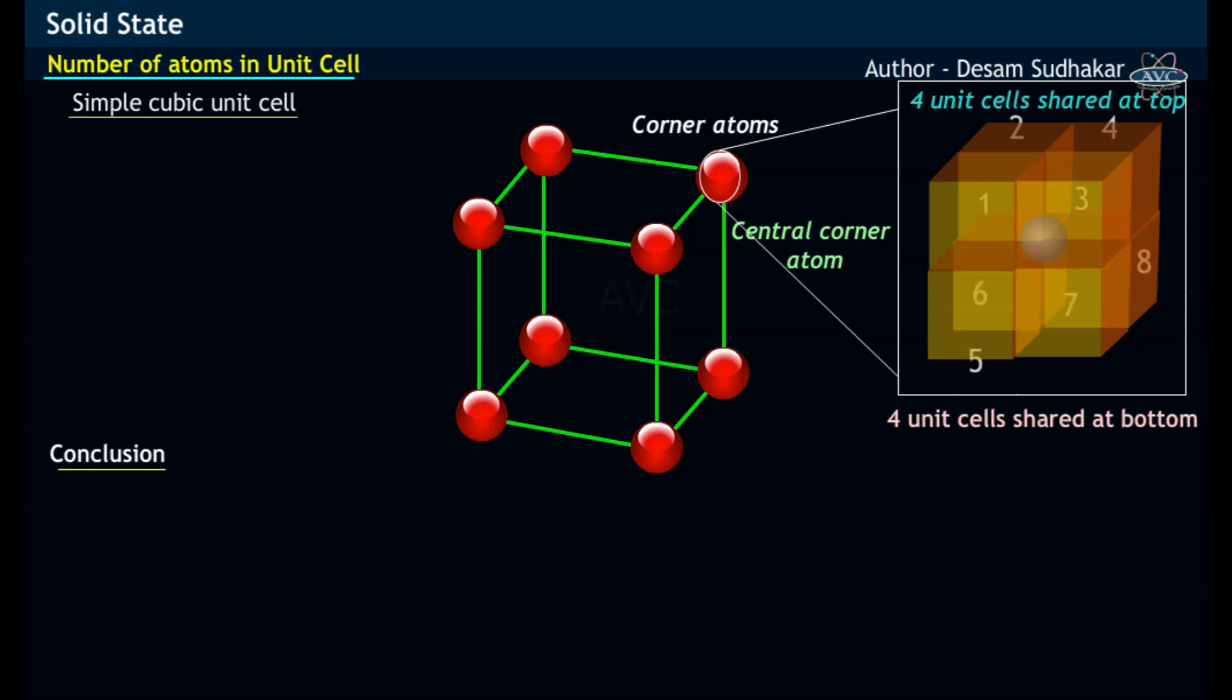This implies that the corner atom of simple cubic unit cell contributes to one-eighth portion of a cubic unit cell as shown.